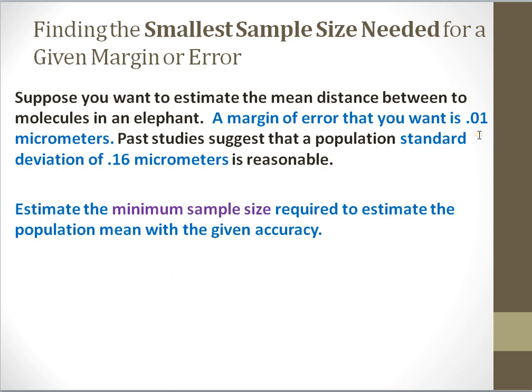So I don't want to be particularly wrong. I want my upper bound to be off by 0.01, my lower bound to be off by 0.01. Now, in the past, studies have suggested that the population standard deviation for the distance between molecules in an elephant is 0.16 micrometers. So I want to estimate the minimum sample size that I need to collect from elephants in order to estimate the population mean with the given accuracy that I would like.